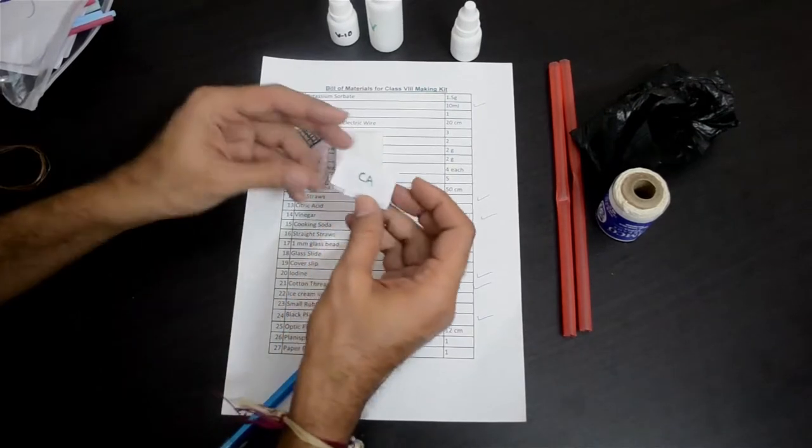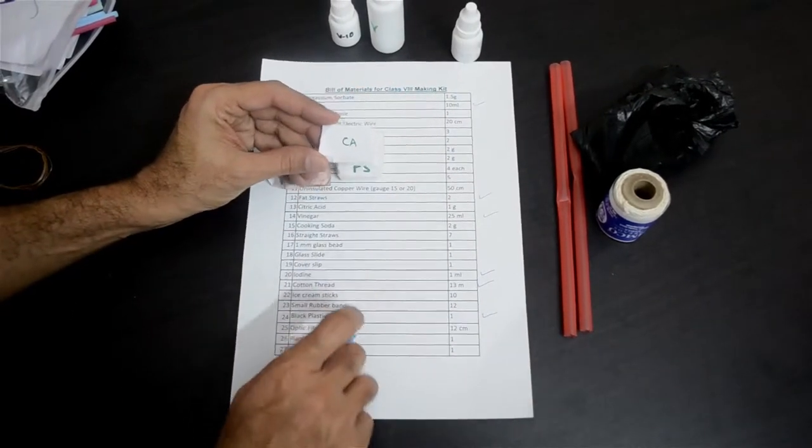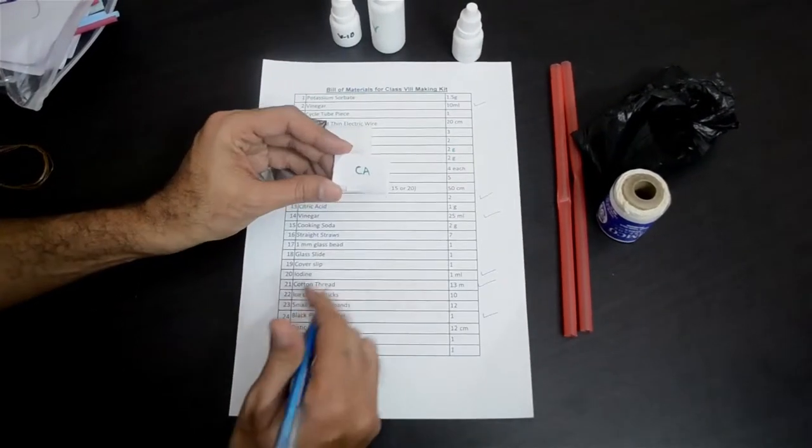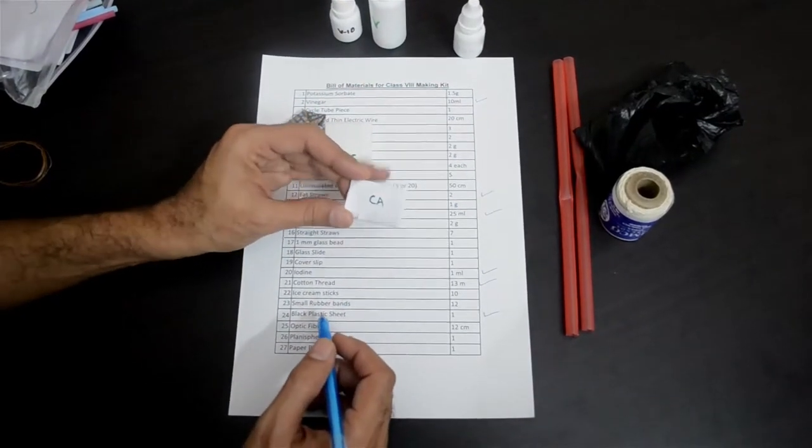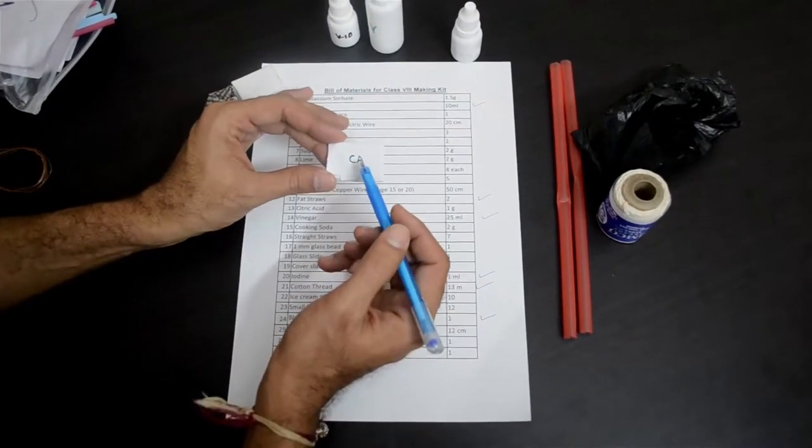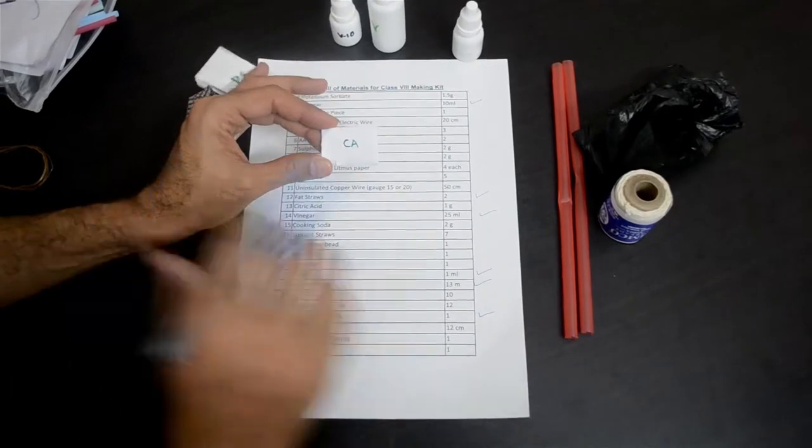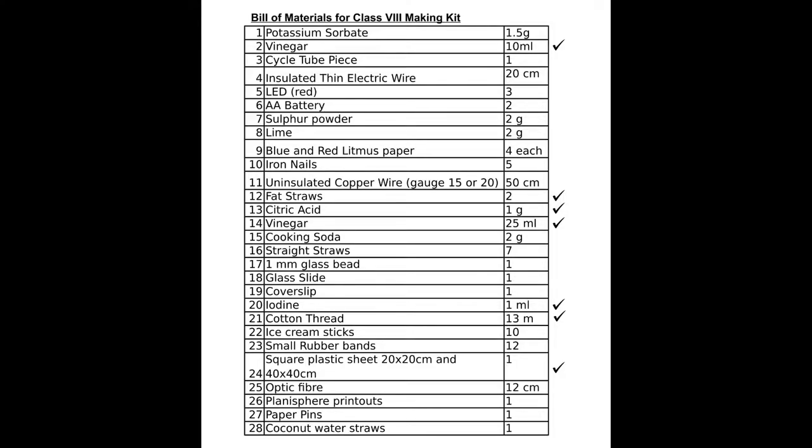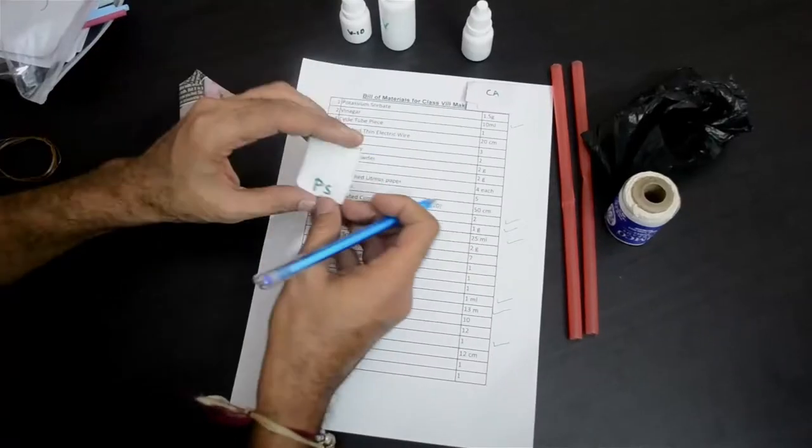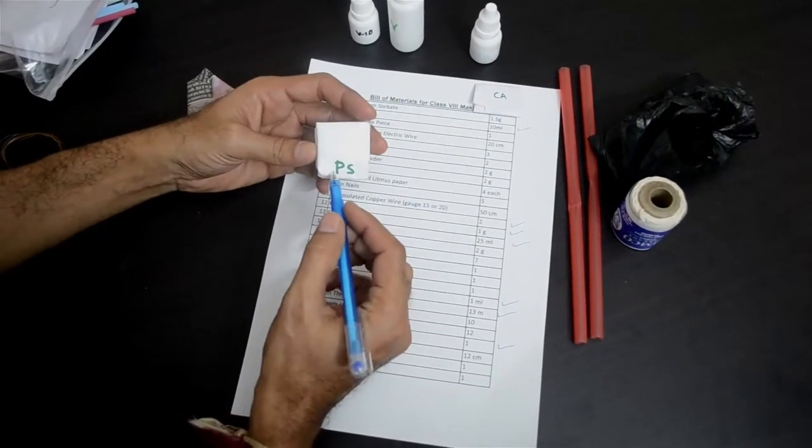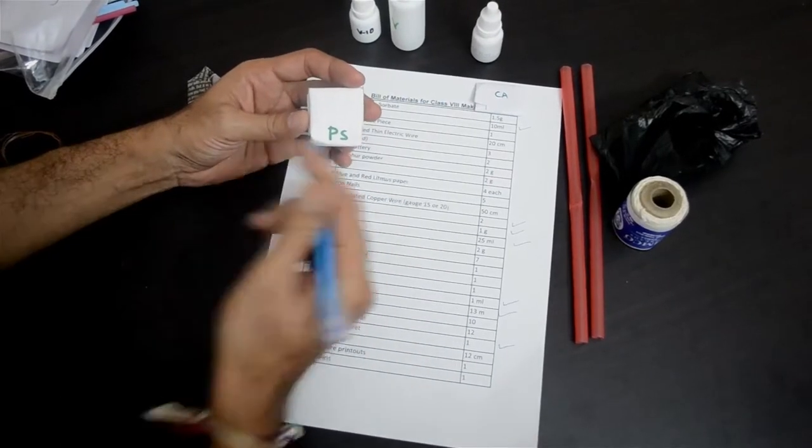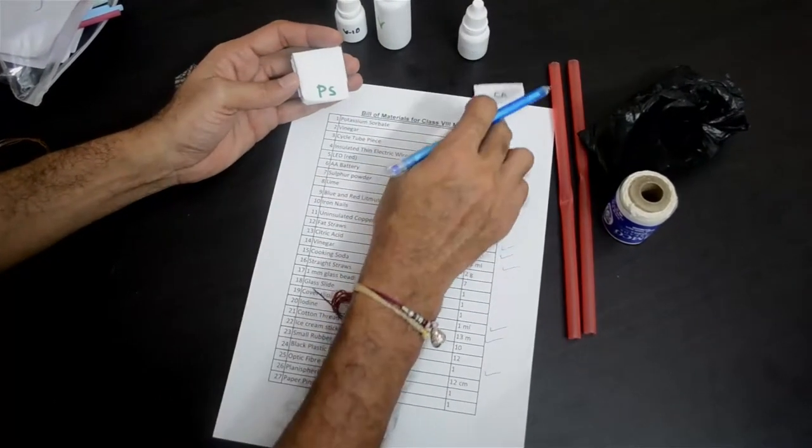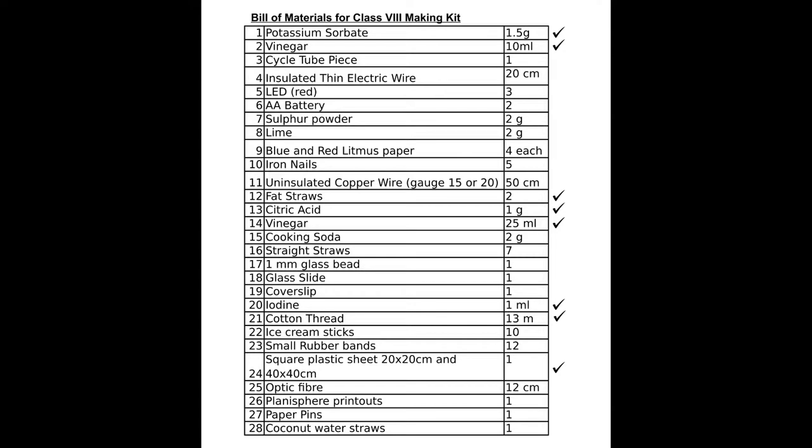You will find one which has been labelled as C-A, which stands for citric acid. You will need citric acid for making a citric acid solution for making your own battery. Citric acid is item number 13 in our list, around 1 gram of that. You will find another one which has been labelled as P-S. P-S stands for potassium sorbate, which is item number 1 in our list, around 1.5 grams of that.